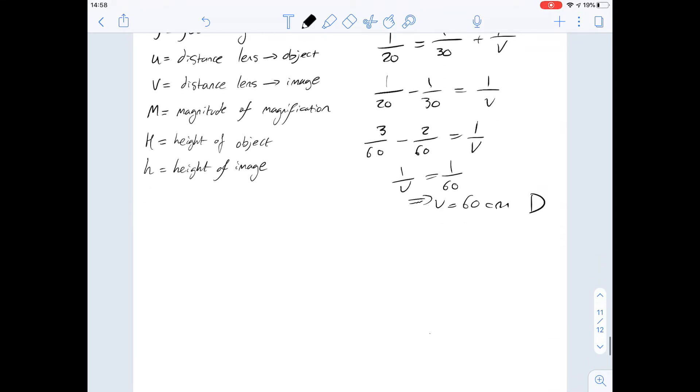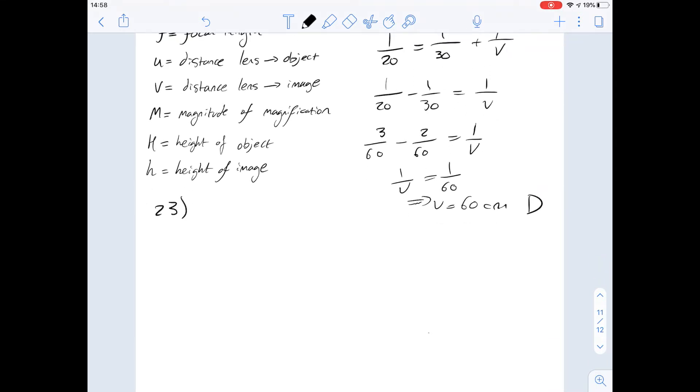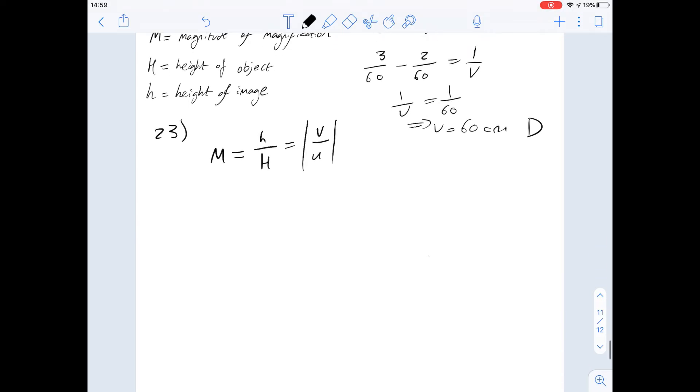What about question 23 then? It says if the plate is positioned 30 centimeters from the lens as before, the dimensions of the rectangular image formed on the screen will be what? We're given an equation that gives us the magnitude of magnification. In other words, that's the value that we can multiply the dimensions by in order to get the new dimensions of the image.